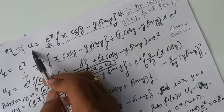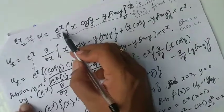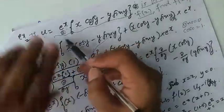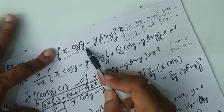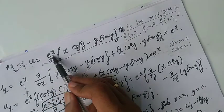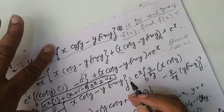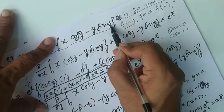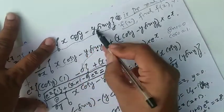Now from u, let us find uy. With respect to y, e to the power x is constant — take it outside. So e to the power x is taken outside, and I have to differentiate x cos y minus y sin y with respect to y. That gives: dou by dou y of x cos y, minus dou by dou y of y sin y.